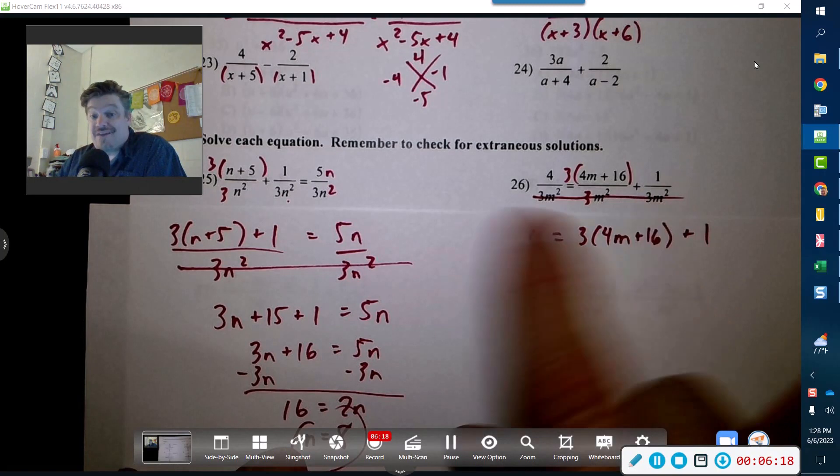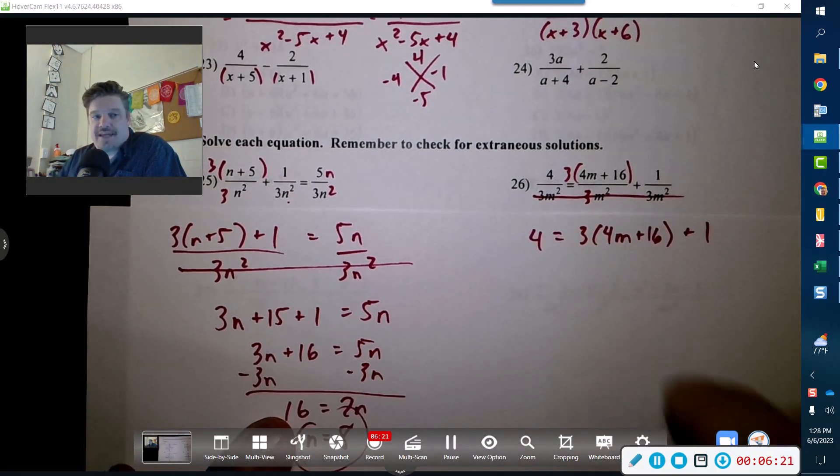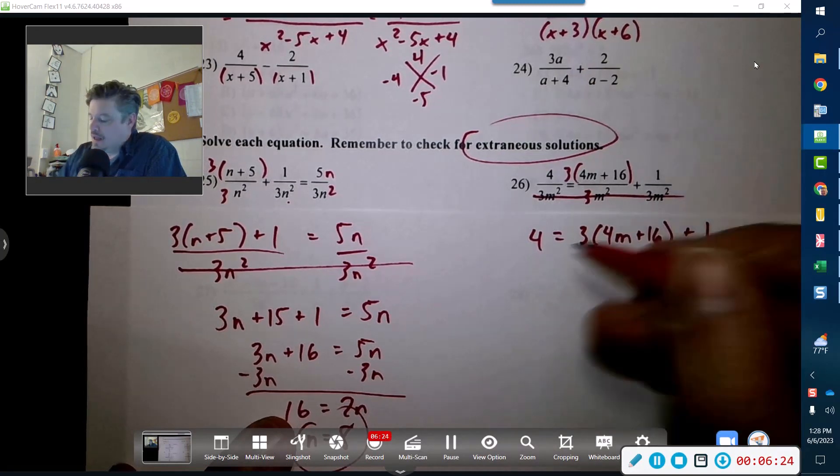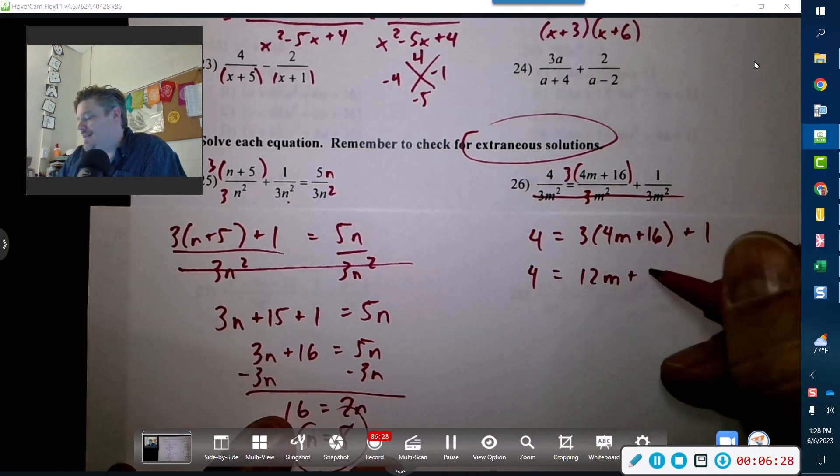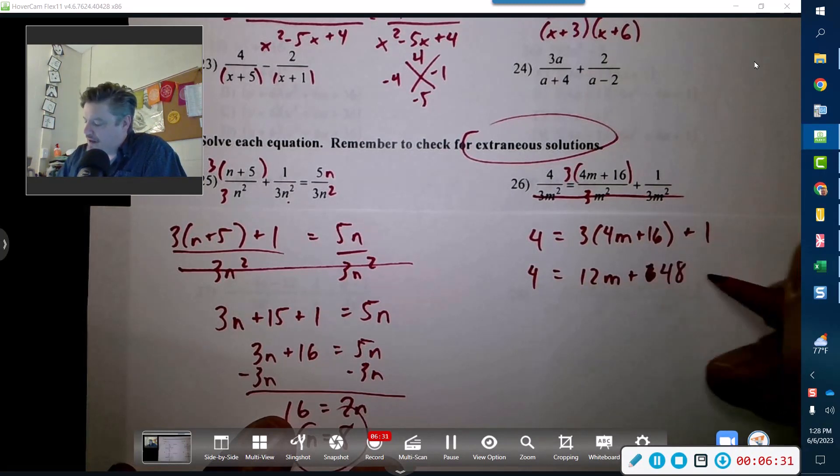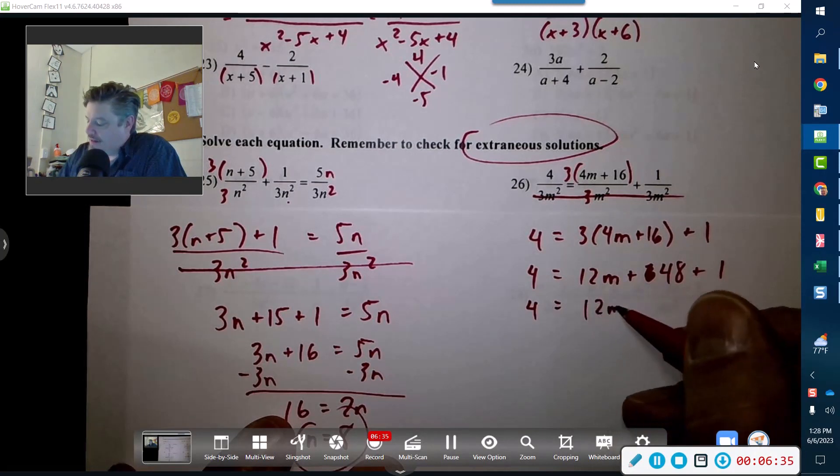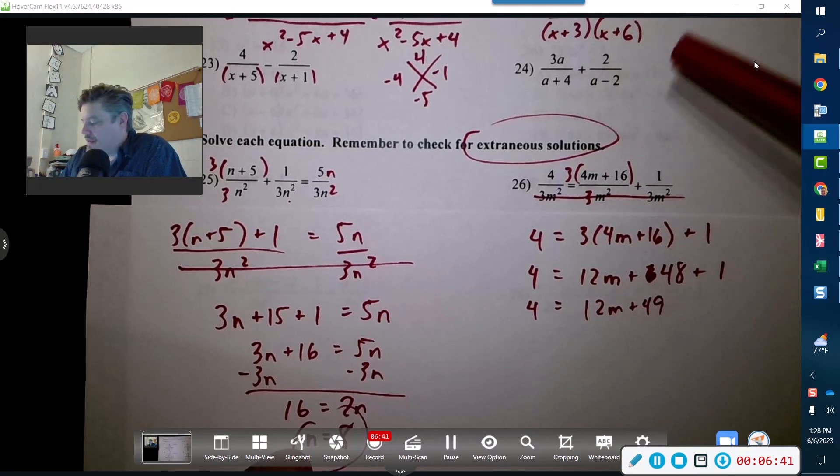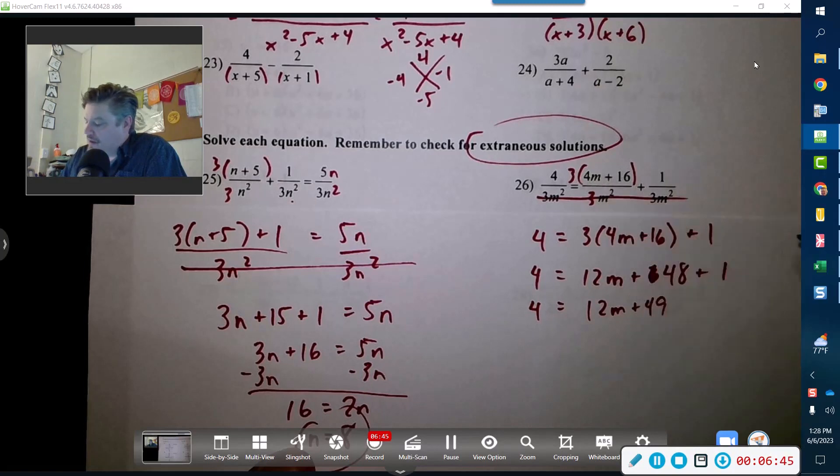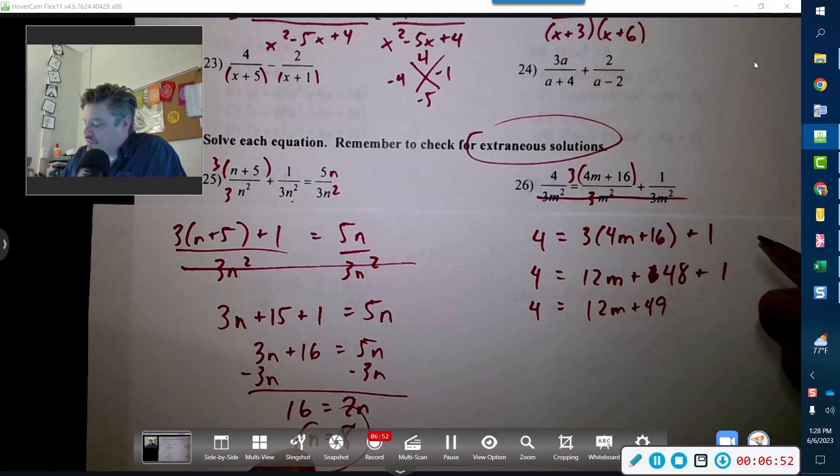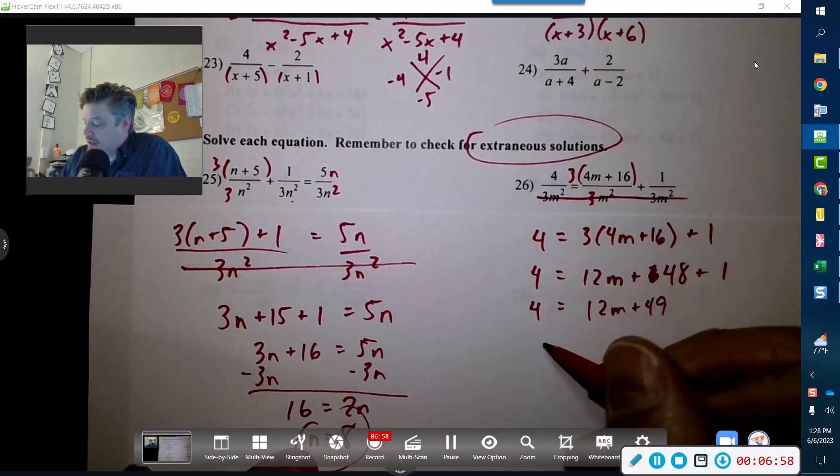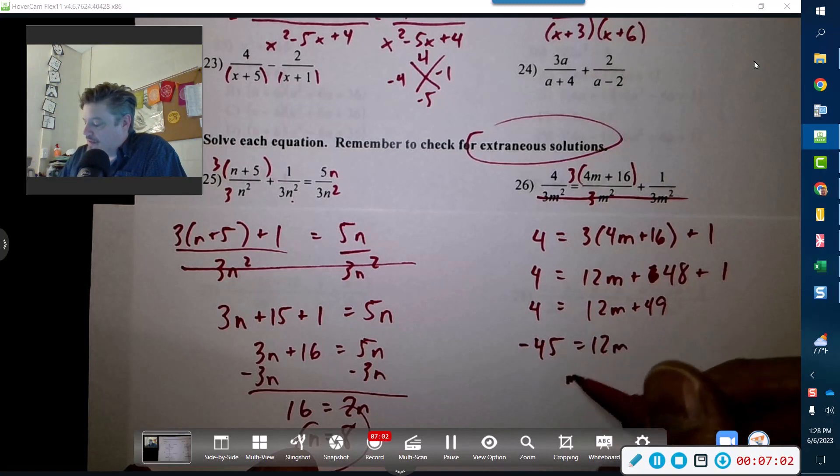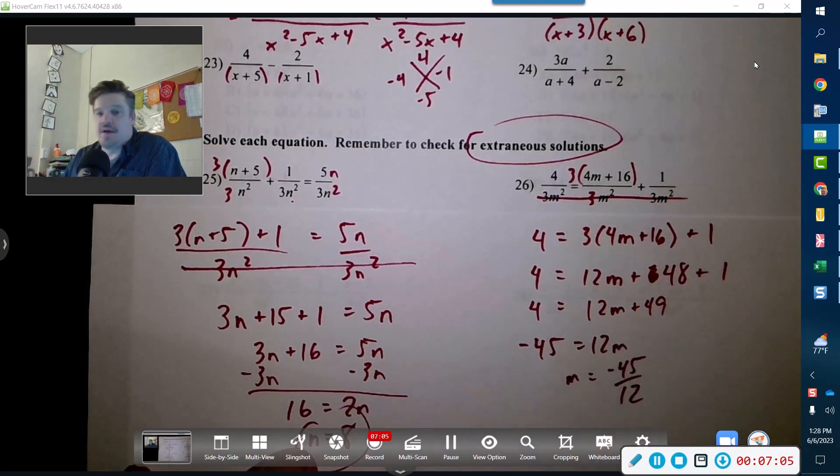All right, so 4 equals 12, and then 3 times that's 6... nope, that's 48, and then that's 1. So 4 equals 12m plus 49. We're gonna go... let's see, did I do that right? I hope I did. Okay, well subtract 49, so negative 45, and so m equals negative 45 divided by 12. And I kind of just want to make sure that that is correct.